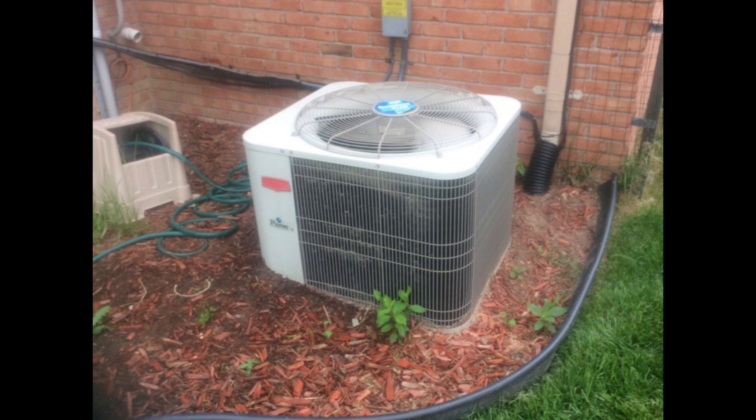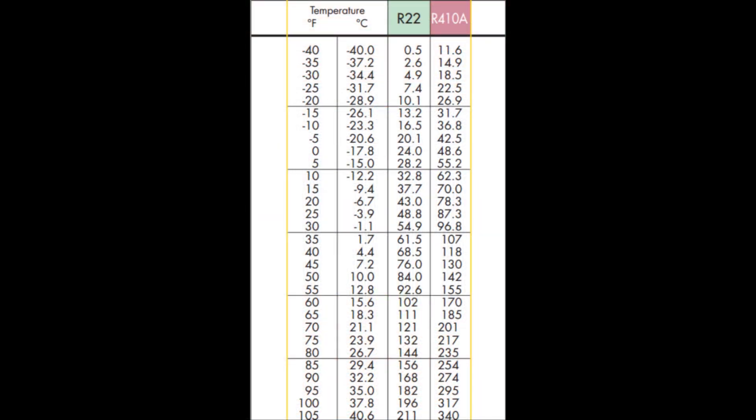We can use something like a PT chart — that's a pressure and temperature chart. Here we can see that each refrigerant has a specific pressure at a particular temperature. You can make a screenshot of this chart, or get the PT chart from the description below.